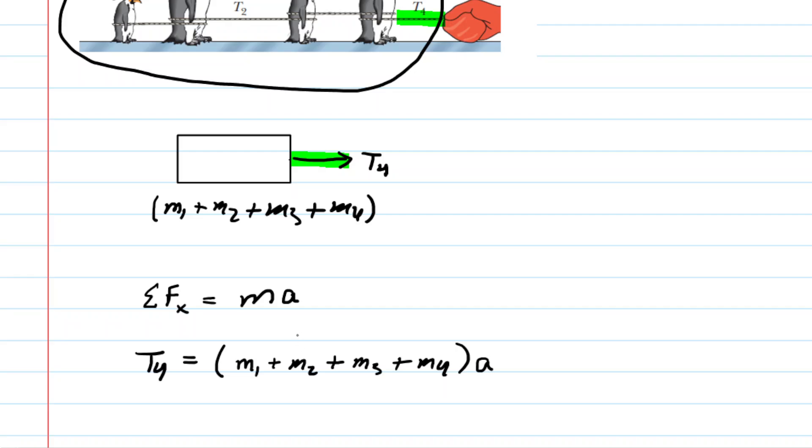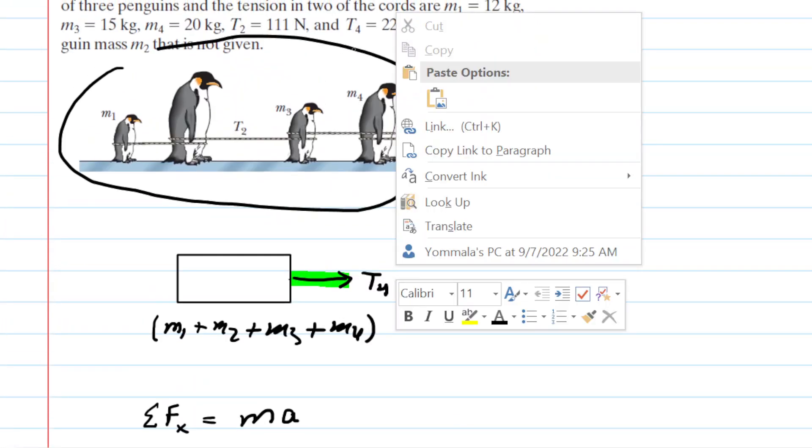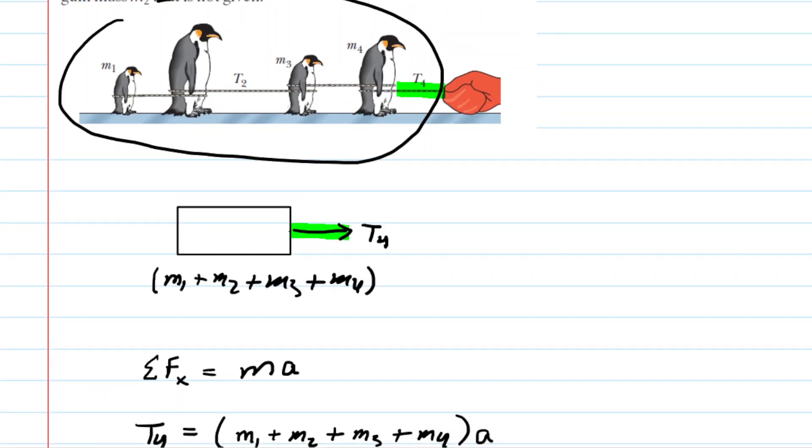Now, at this stage, perhaps we can plug in some known values. We do have the value of tension 4 that was given to us as 222 newtons. And then we have m1, m3, and m4. So let's go ahead and plug those into the equation that we just developed at the bottom of the screen here.